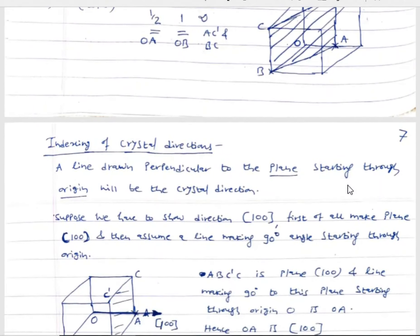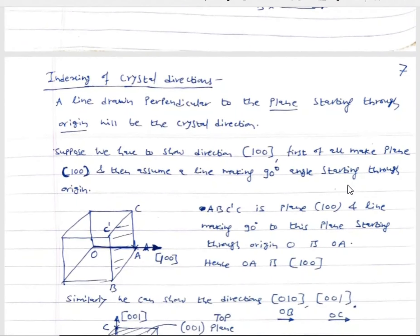To show direction (1 0 0), first make the (1 0 0) plane. A crystal direction must satisfy two conditions: the line must be perpendicular to the plane and must start through the origin. There are many lines making 90 degrees to the plane, but only the one starting through origin is taken. The plane ABC C' is the (1 0 0) plane, and the line from origin O perpendicular to this plane — the OA direction — is the [1 0 0] direction.